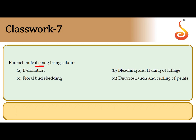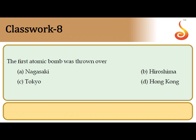The seventh question: photochemical smog is formed when pollutants react with sunlight, producing a secondary pollutant containing toxic chemicals like ozone and peroxyacetyl nitrate (PAN). In the case of plants, photochemical smog causes bleaching and blazing of foliage. So the correct answer is the second option: bleaching and blazing of foliage — the detrimental effect of photochemical smog upon plant life.